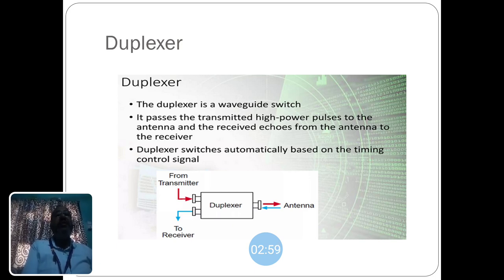It passes the transmitted high power pulses to the antenna and receives the echoes from the antenna to the receiver. The duplexer switches automatically based on the timing control signal.